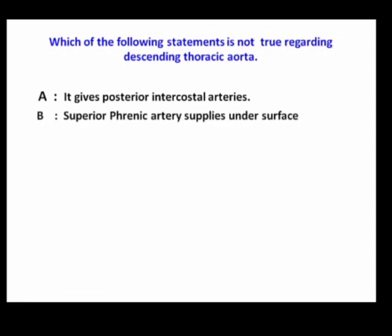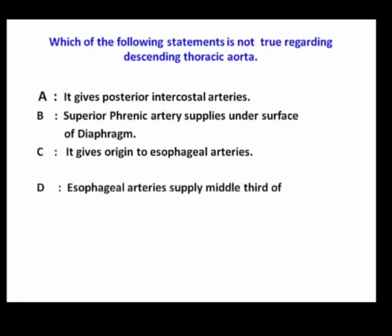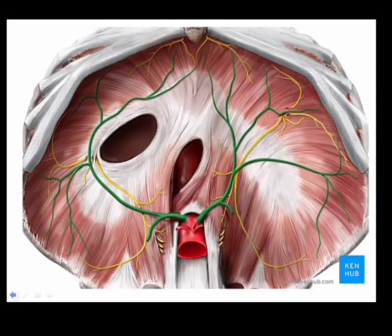Which of the following statements is not true regarding the descending thoracic aorta? It gives posterior intercostal arteries — true. Superior phrenic artery supplies the under surface of the diaphragm — false. It gives origin to esophageal arteries — true. The esophagus has segmental blood supply: the upper one-third is supplied by inferior thyroid arteries, the middle one-third by direct branches from the descending thoracic aorta called esophageal arteries, and the lower part by the left gastric artery.